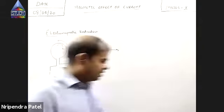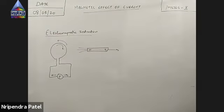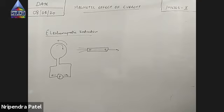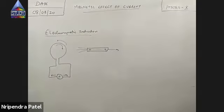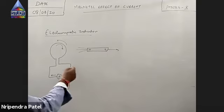If the magnet is brought close to the circular loop or coil, some current flows in that coil. If you take the magnet away, then the current flows in the coil but this time in the opposite direction. And if the speed of motion of the magnet is increased, then the current will also increase.